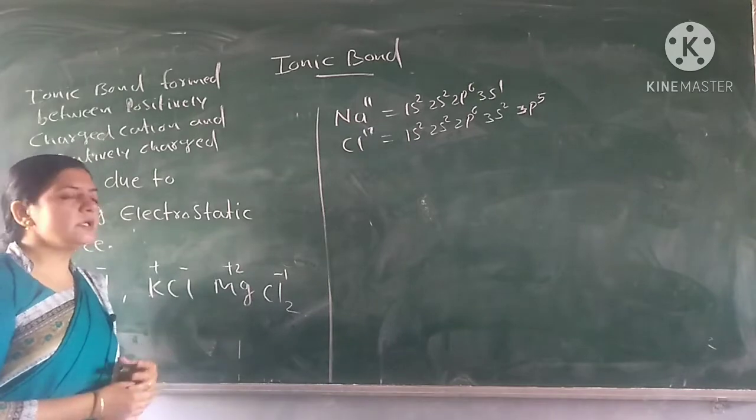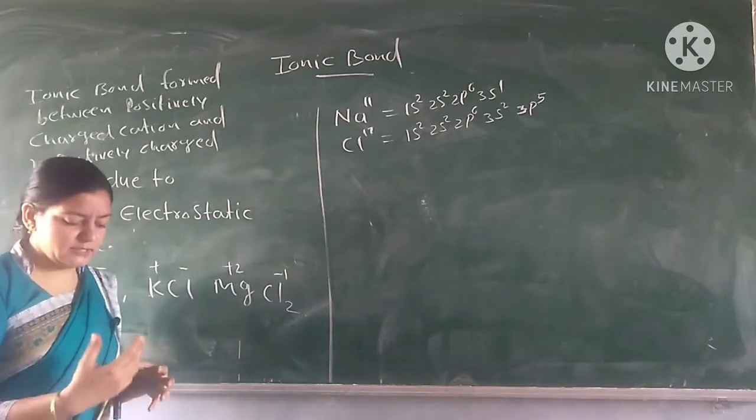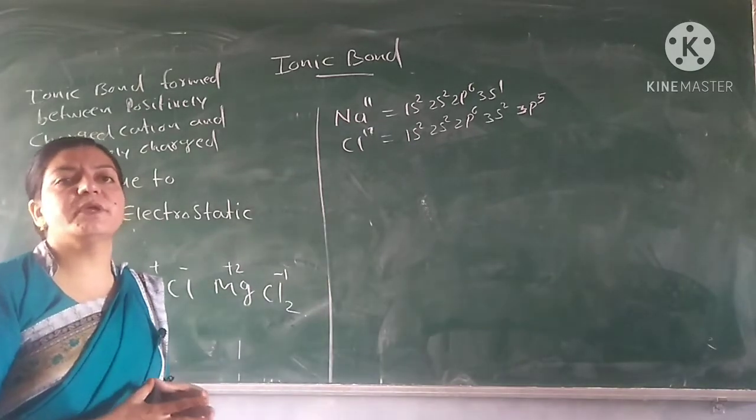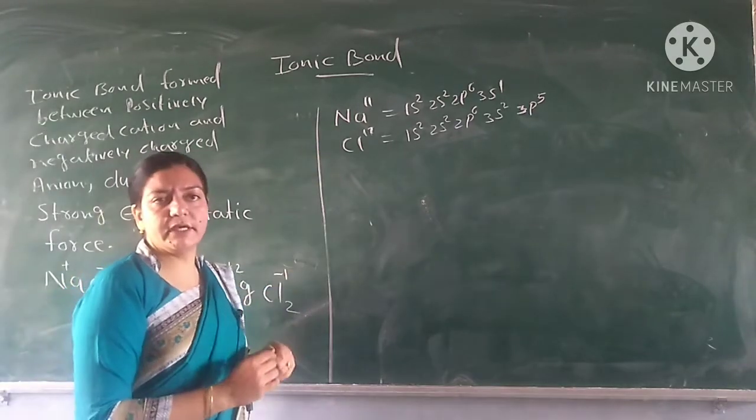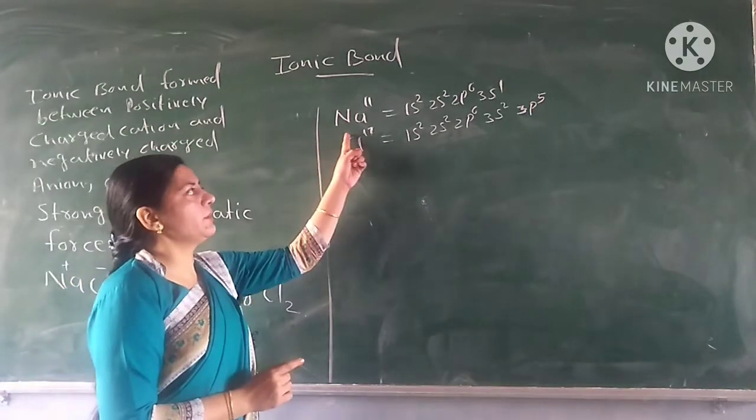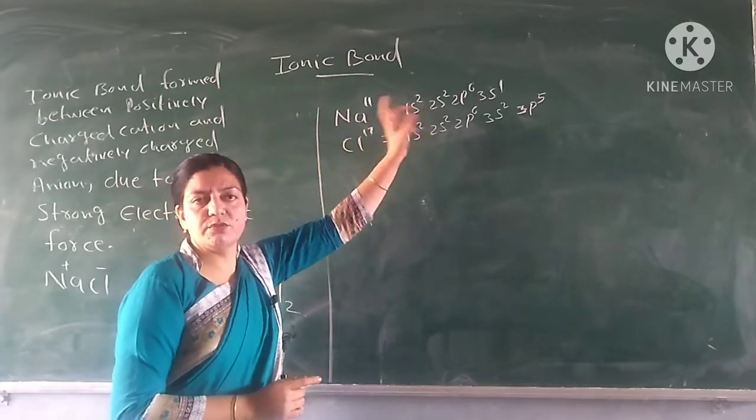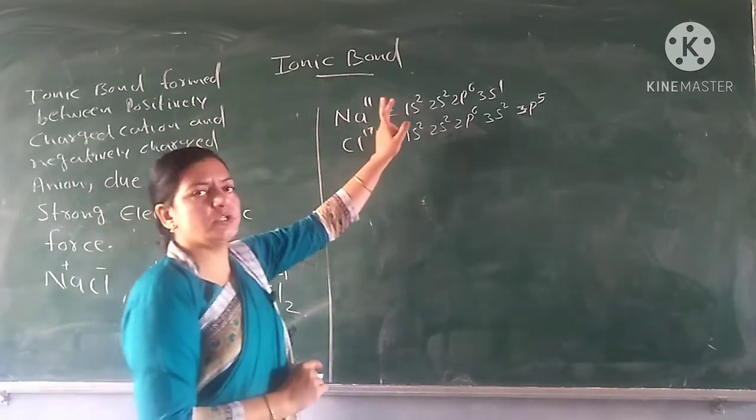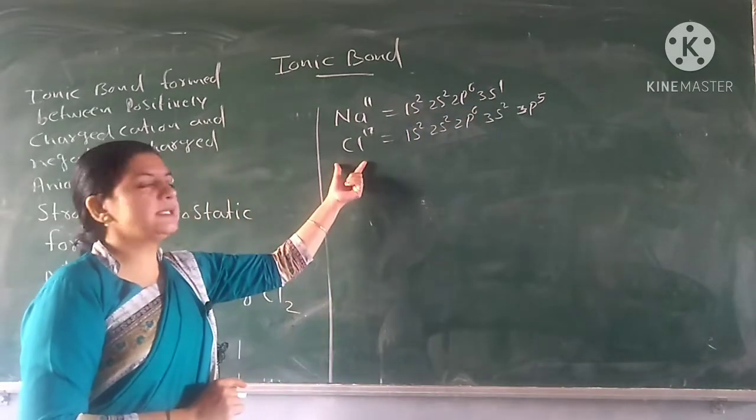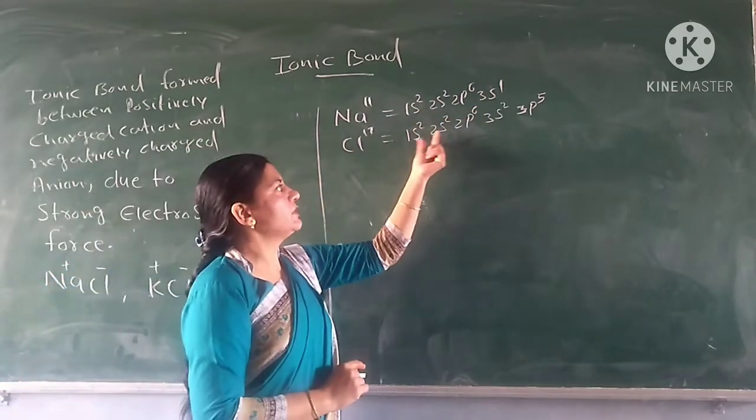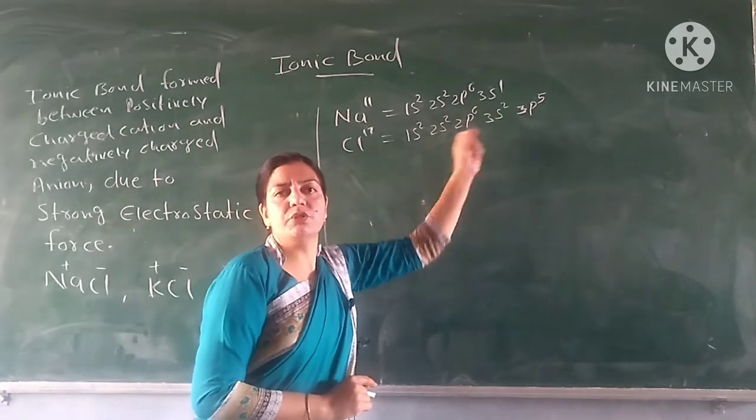Now we'll discuss which energy is involved in ionic bond formation. Let's take the example of NaCl. If we look at sodium's electronic configuration, it is 2,8,1. Chlorine has 17 electrons with configuration 2,8,7.